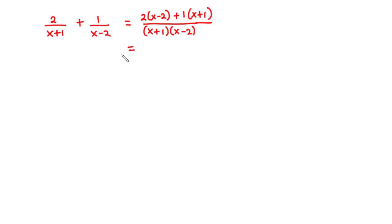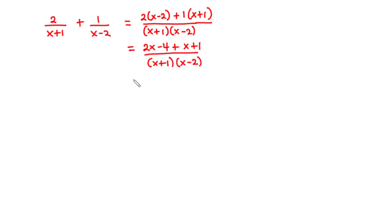Let's multiply across. This becomes 2x minus 4 plus x plus 1, divided by x plus 1 times x minus 2. We can further simplify: 2x plus x is 3x, negative 4 plus 1 is negative 3. So we have 3x minus 3 over x plus 1 times x minus 2.